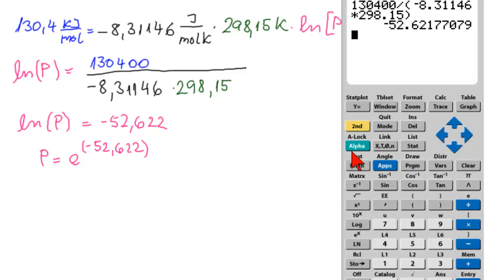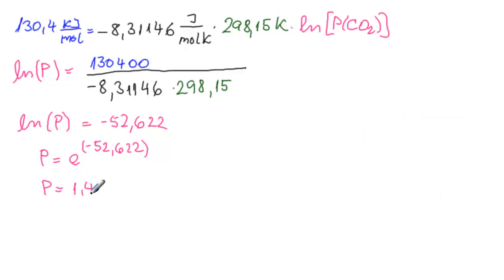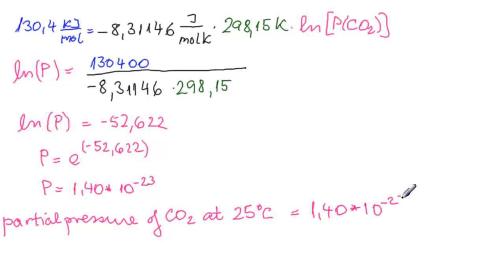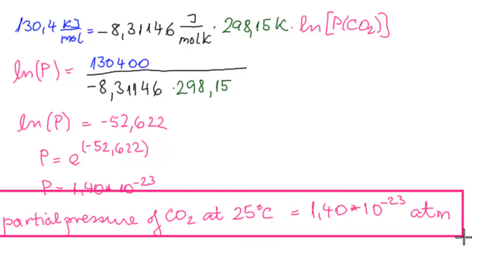Using the calculator: e^(−52.622) = 1.40 × 10^(−23). So the partial pressure of CO2 at 25°C (298.15 K) is 1.40 × 10^(−22) atm (multiplied by 1 standard atmosphere). This is our answer to the first part of the problem.